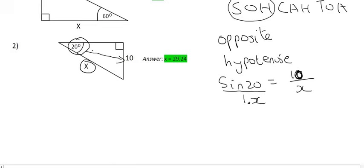So you would have to multiply the bottom part by x. But what you do to the bottom, you must do to the top. And so we're going to end up with x sin 20 over x equals to 10 over x.